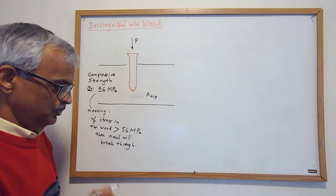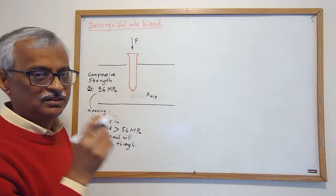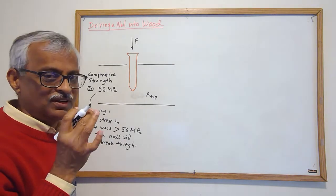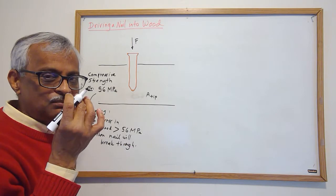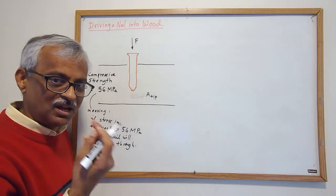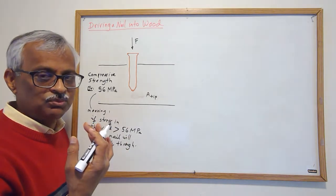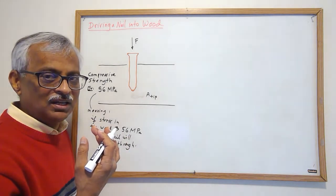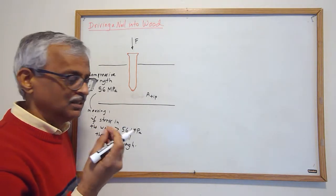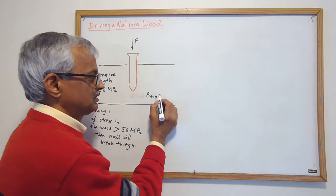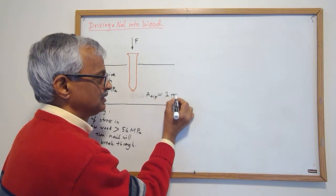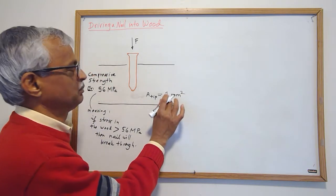That's what this means. We will say that the tip is very fine, maybe one millimeter by one millimeter if you say square, or if it's round, it's about one millimeter diameter. We just use that as one millimeter square in our example.